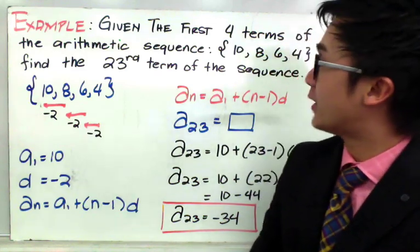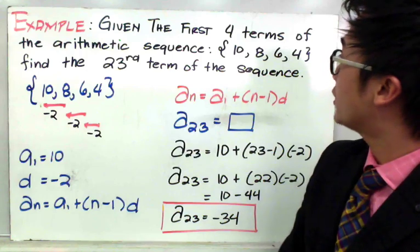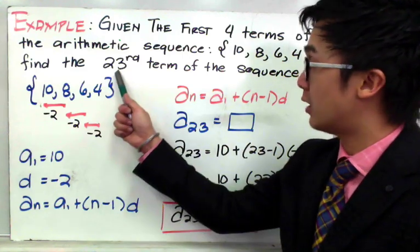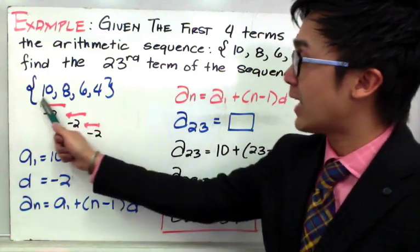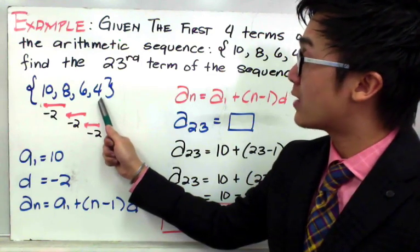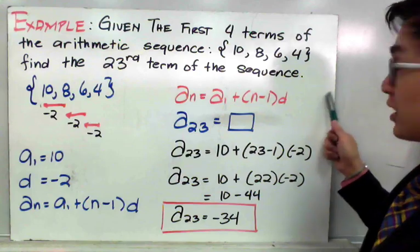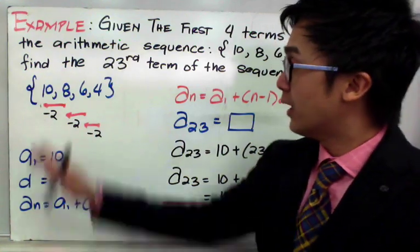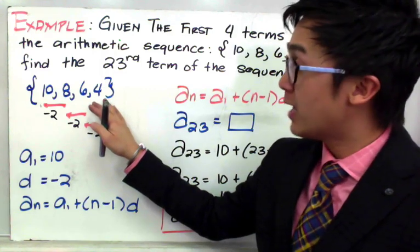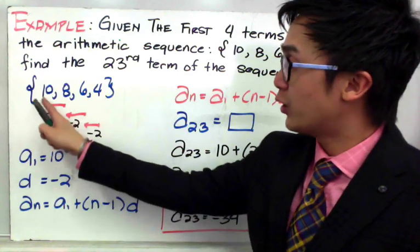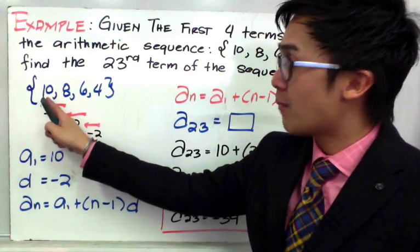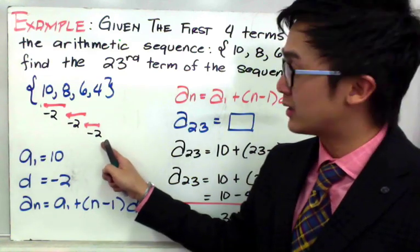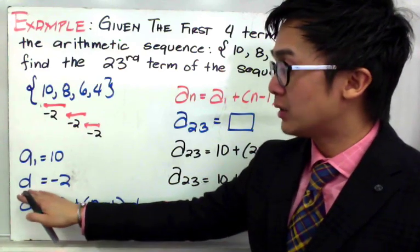For this example, we are given the first four terms of an arithmetic sequence: 10, 8, 6, and 4, and we need to find the 23rd term. The first term a sub 1 is 10. To find the common difference, we subtract consecutive terms: 8 minus 10, 6 minus 8, 4 minus 6 — all give negative 2. Therefore, a sub 1 equals 10 and d equals negative 2.